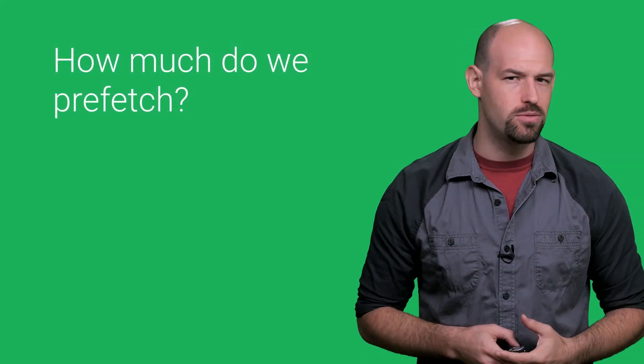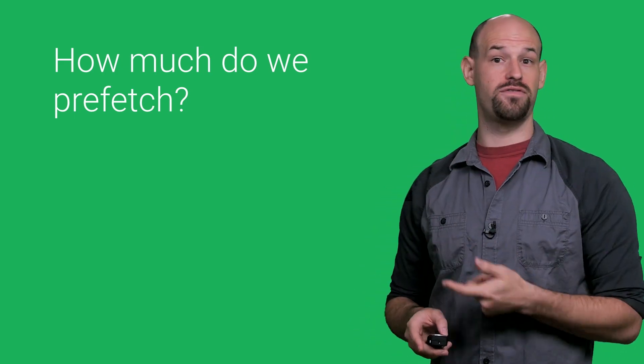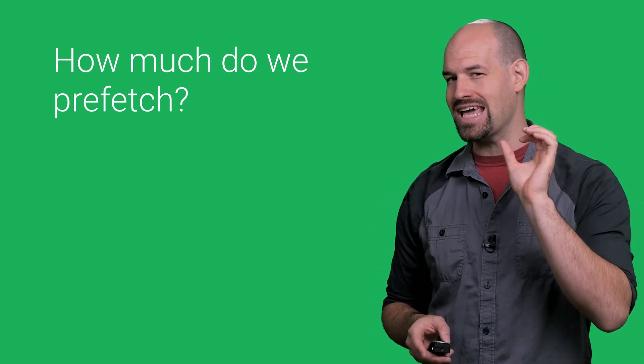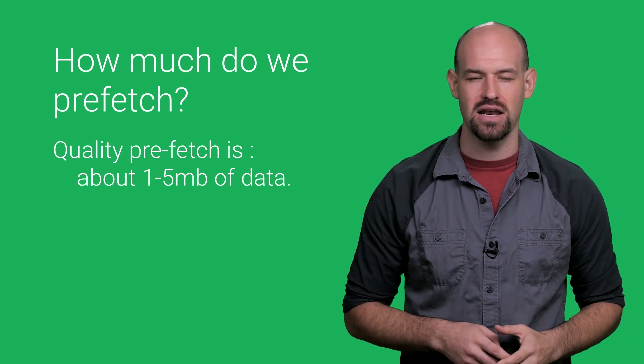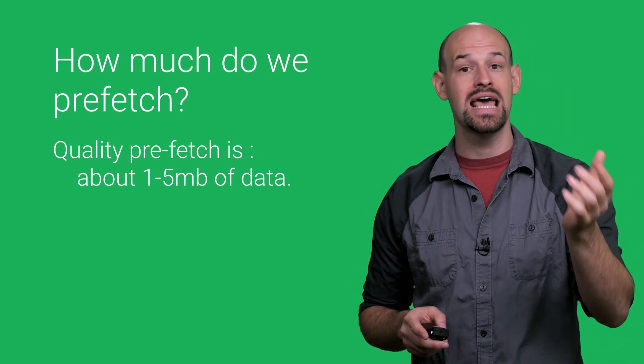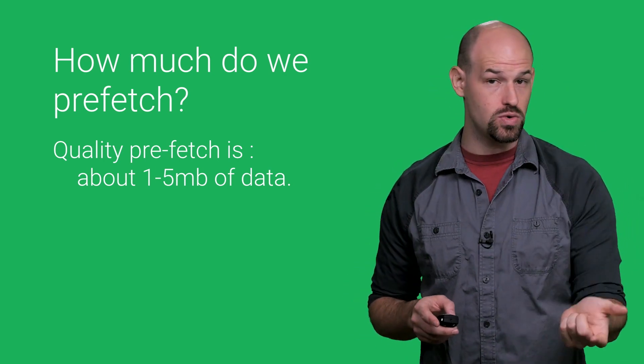How much data is in a good prefetch? Well, the general rule of thumb is that on a 3G connection, a quality prefetch is about one to five megabytes of data. Of course, that's with the understanding that the data will be needed and used by the user.